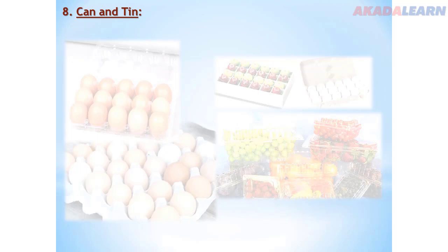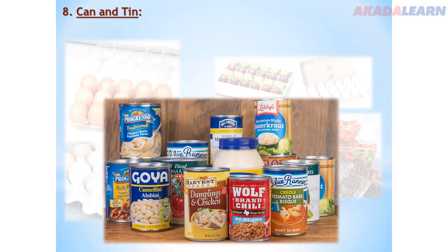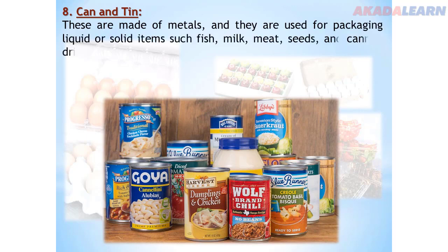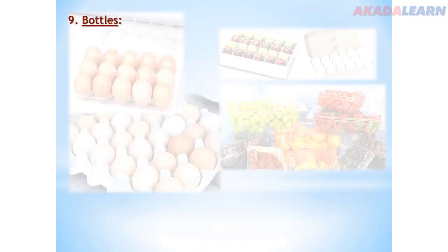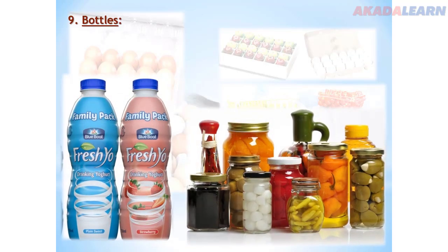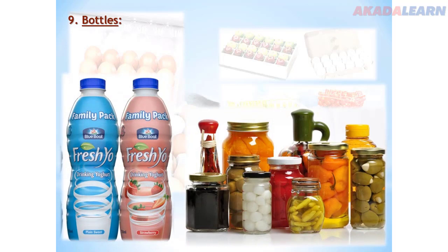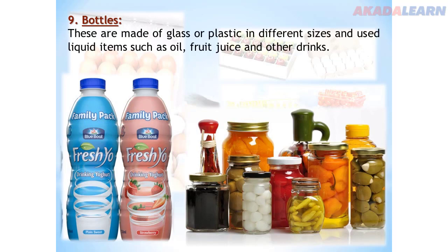Number eight: cans. These are made of metals and are used for packaging liquid or solid items such as fish, milk, meat, seeds and canned drinks. Number nine: bottles. Bottles can be made of plastic or glass in different sizes. Liquid items such as oil, fruit juice and other drinks can be packaged in bottles.